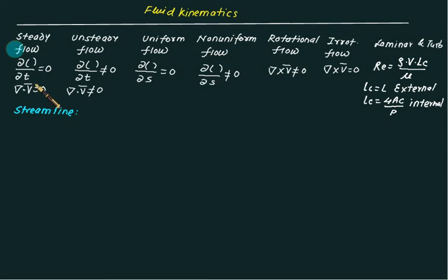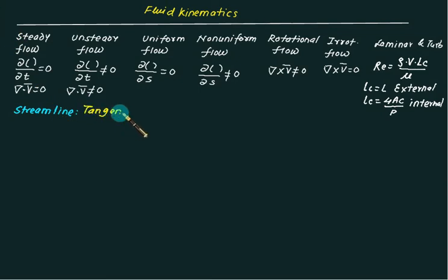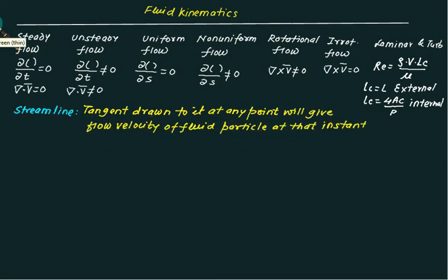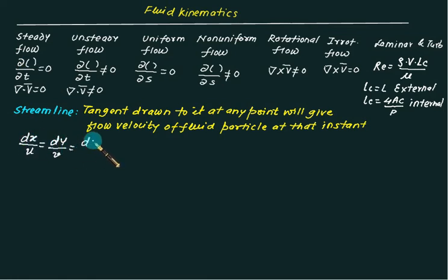Reynolds number less than 2300 means laminar flow; otherwise turbulent, for internal flow. For external flow, the critical Reynolds number is 5 × 10⁵. A streamline is an imaginary line such that if a tangent is drawn to the line, it gives the velocity at that point. The tangent drawn at any point gives the flow velocity of a fluid particle at that instant. The equation of a streamline is dx/u = dy/v = dz/w, where u, v, w are velocity components along x, y, z.